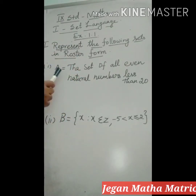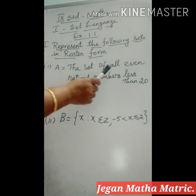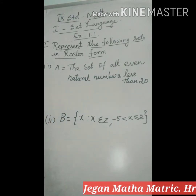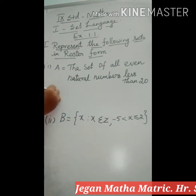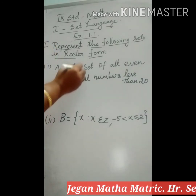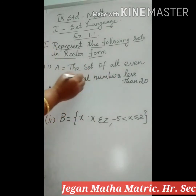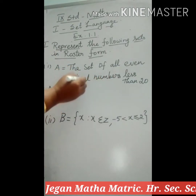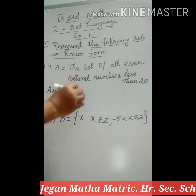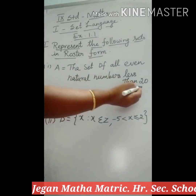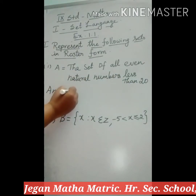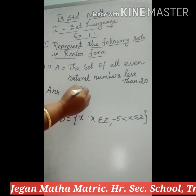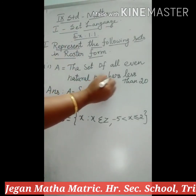The first question is: A is equal to the set of all even natural numbers less than 20. You have to list all the elements in the set. What are natural numbers? Starting from 1 onwards are called natural numbers. So you have to write the set A equal to natural numbers less than 20.